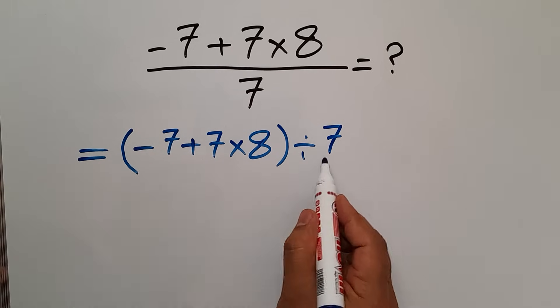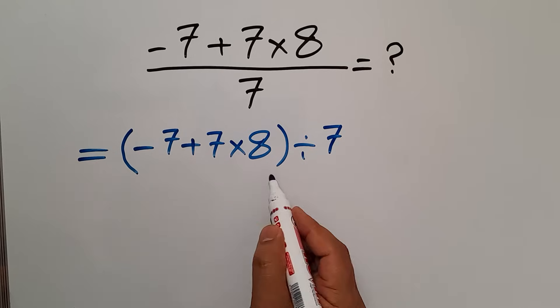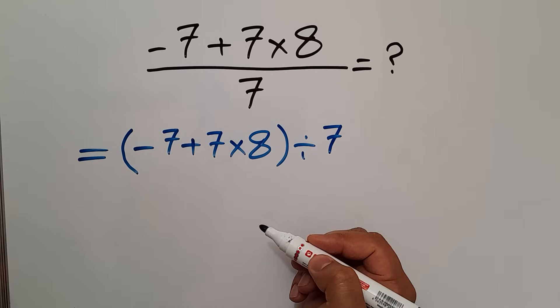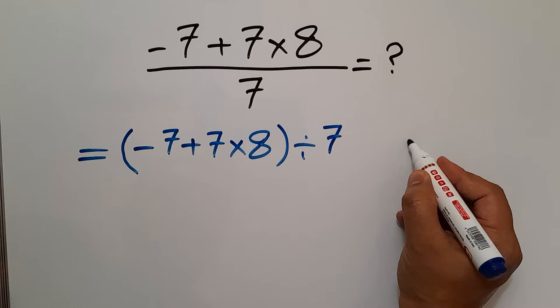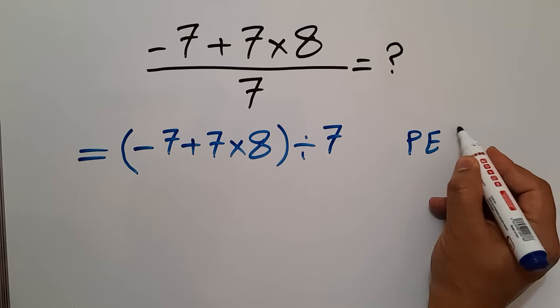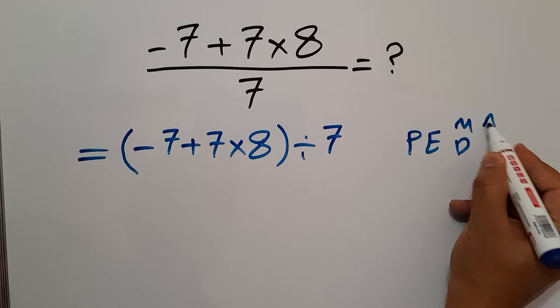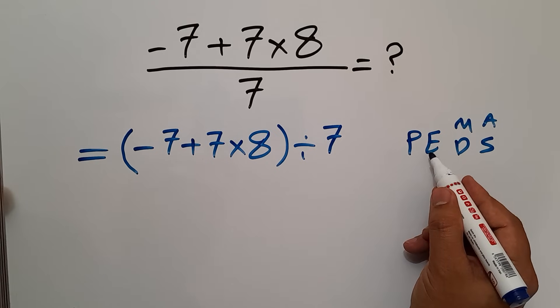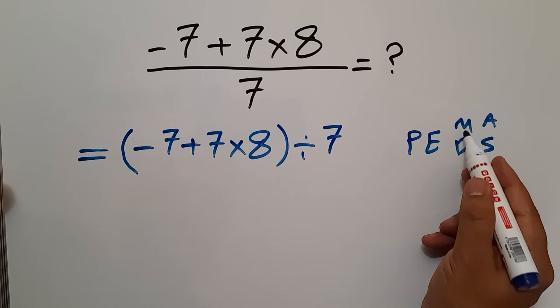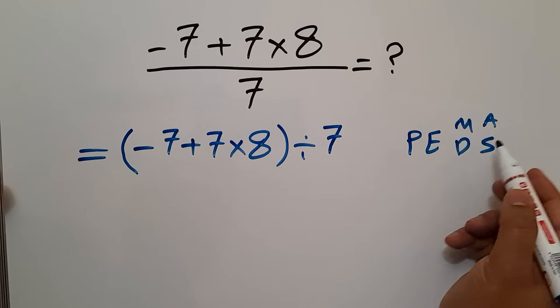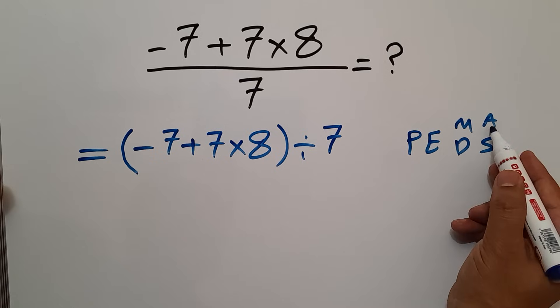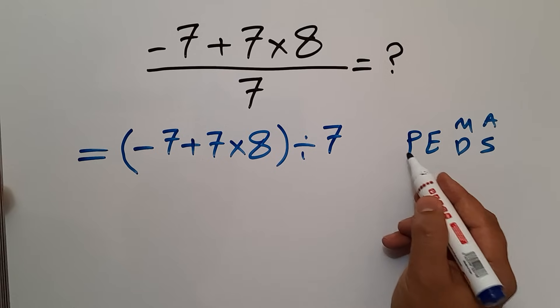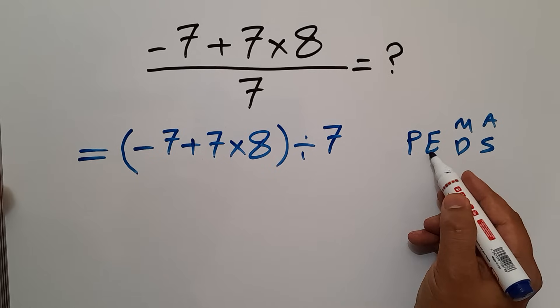Now, in this expression, we have one parentheses and one division. According to the order of operations, which is PEMDAS, P stands for parentheses, E stands for exponents, M and D stands for multiplication and division, and A and S stands for addition and subtraction. We first do parentheses, then exponents, then multiplication or division,